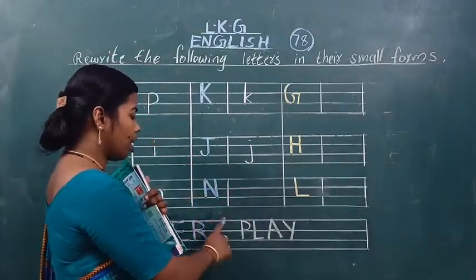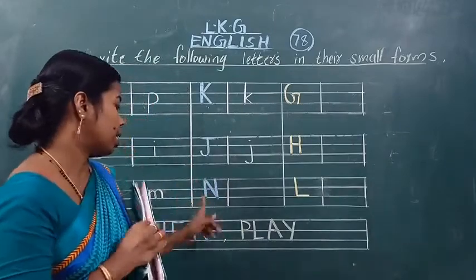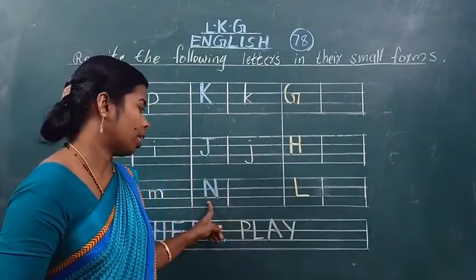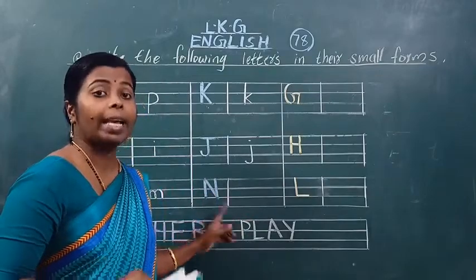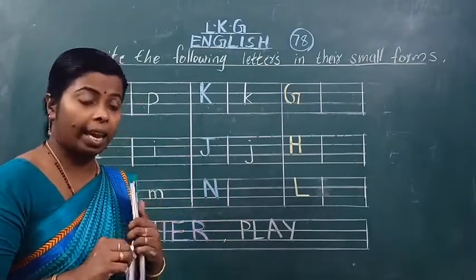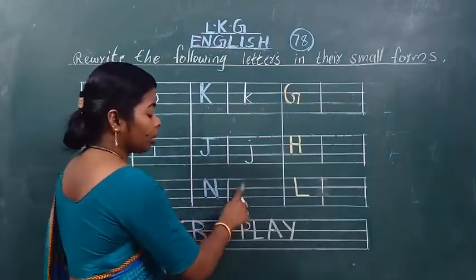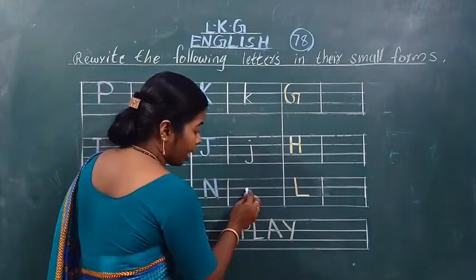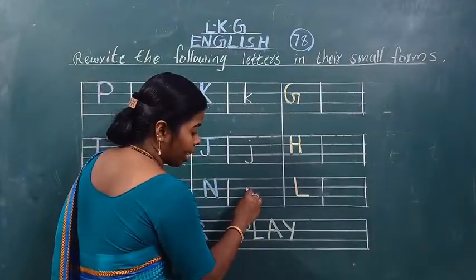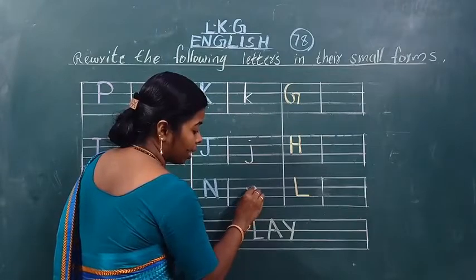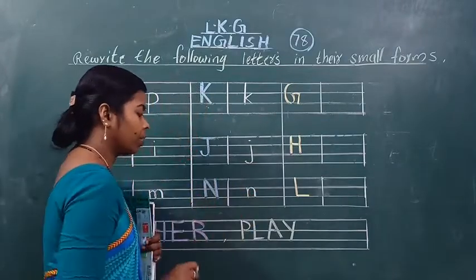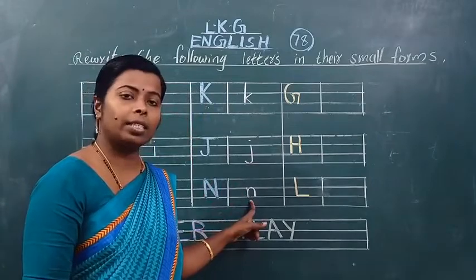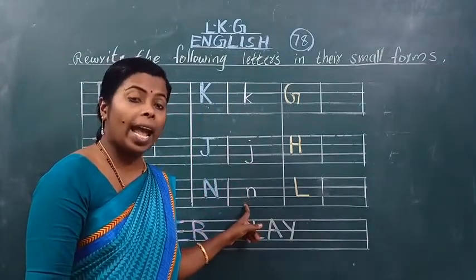Now see here — which letter is this? This is capital letter N. कौन सा letter है? Capital letter N है। और इधर हम कौन सा letter लिखना है? Small letter N लिखना है। देखो कैसे लिखना — standing line, फिर curve। This is small letter N.